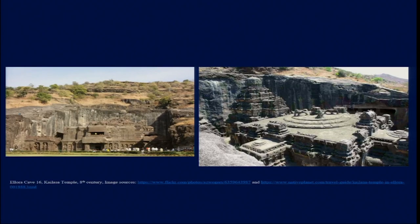Hello everyone, we are continuing on Module 3 on pigments. We have been looking into a range of material starting from the cave or rock shelters of Bhimbetka to the caves of Ajanta, and we have also looked into Sita Navasal. Today we will start our discussion with another site which is also a UNESCO world-heritage site, just like Ajanta and Bhimbetka — that is Ellora. Ellora is situated in the same Aurangabad district as Ajanta, and the two sites are almost 30 to 40 kilometres apart.